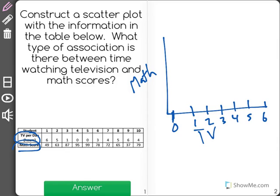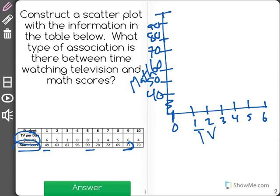Now math scores, it looks like my lowest value is 49, or rather 37 over here, and I range up to 99. So I'm going to draw a little squiggly here to show that I'm skipping some numbers, and I will start at 40 and count all the way up to 100. 100 will take place at the very top up there.